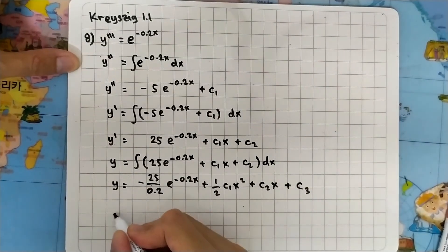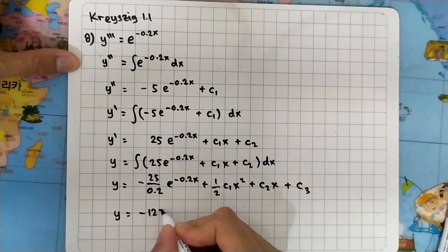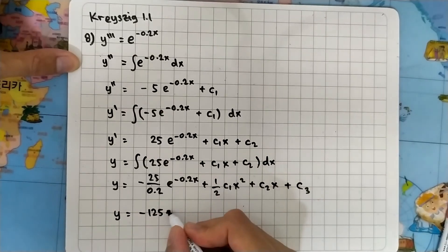And for this one we can simplify this as y equals minus 125 e to the minus 0.2x.